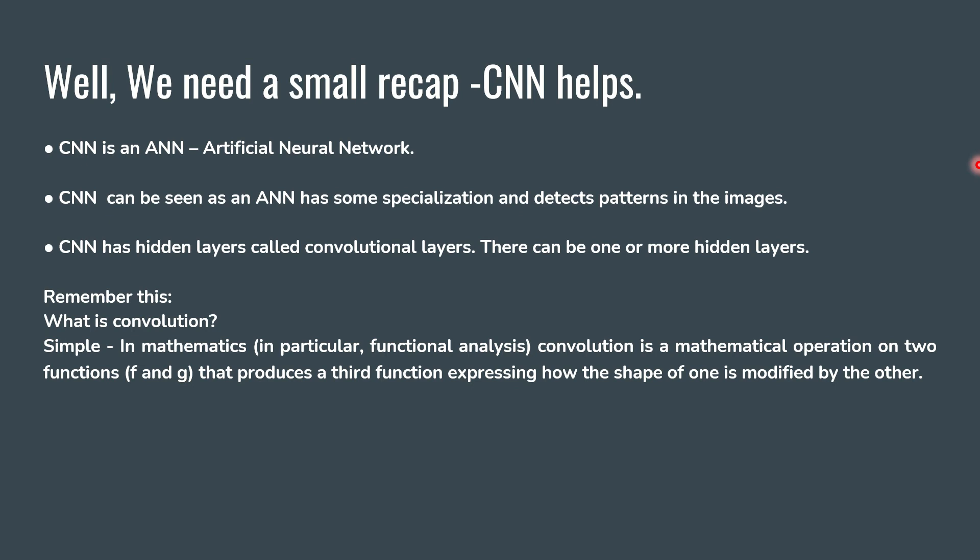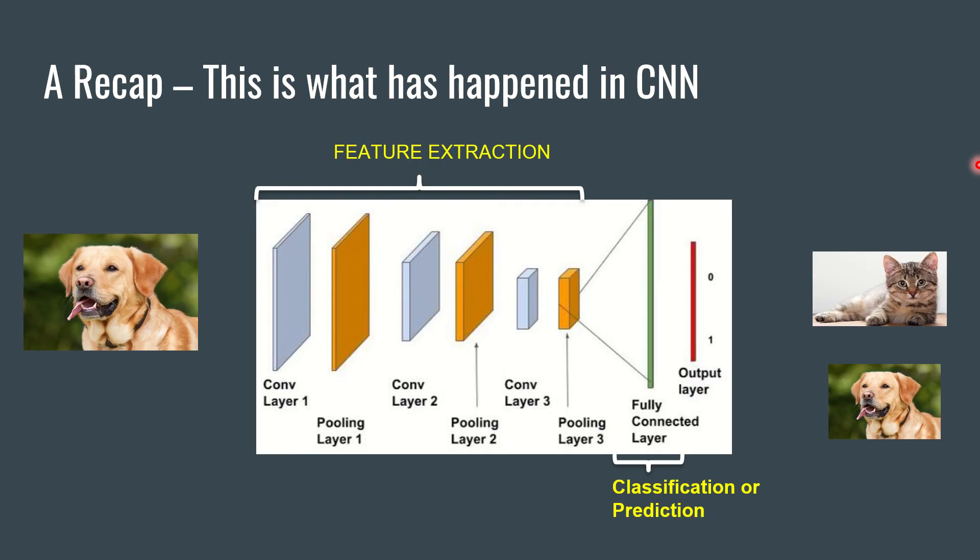Before going into it, we need to get a recap of what is CNN because we are going to explain it through this. CNN is an ANN. I have explained it very clearly already in my videos — if you do not have exposure to it, I request you to listen to it. CNN has got multiple hidden layers, and these hidden layers — one or more or all — are called as the convolution layers. Convolution is a mathematical operation on two functions which produces a third function expressing how the shape of one is modified by the other.